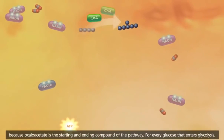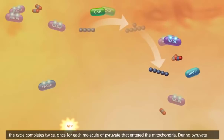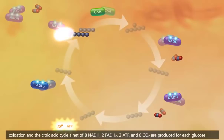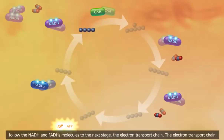For every glucose that enters glycolysis, the cycle completes twice, once for each molecule of pyruvate that entered the mitochondria. During pyruvate oxidation and the citric acid cycle, a net of 8 NADH, 2 FADH2, 2 ATP, and 6 CO2 are produced for each glucose molecule. In order to understand how the majority of the energy is produced by aerobic respiration, we need to follow the NADH and FADH2 molecules to the next stage, the electron transport chain.